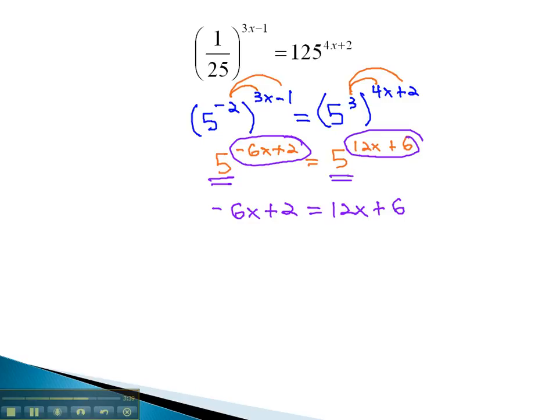Now, we're ready to start solving for x. We can move the variables to the same side by adding 6x to both. 2 equals 18x plus 6.